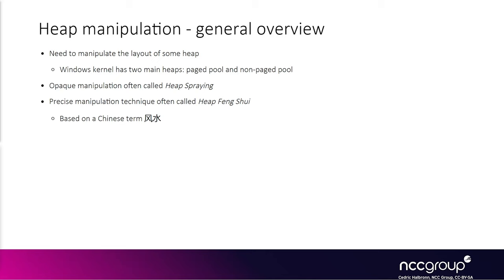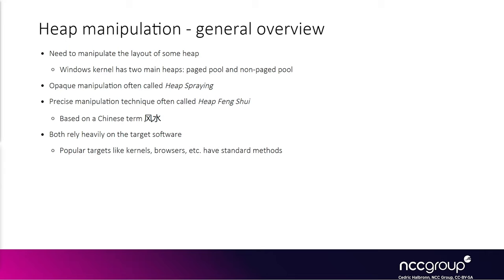Both techniques are heavily reliant on the actual software you're targeting. Browsers typically have some JavaScript functionality that people like to use with certain types of arrays, or back in the day people would load lots of images to get a deterministic address and bypass ASLR. That would allow you to spray memory. Kernels have their own sort of semi-established techniques, but sometimes it's very situation-specific.